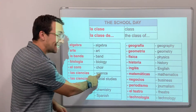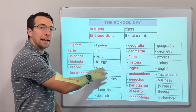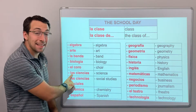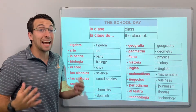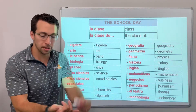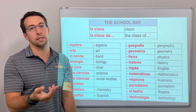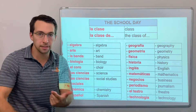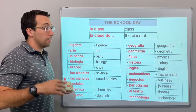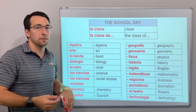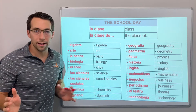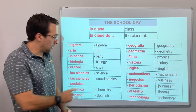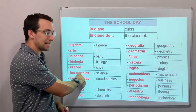Las ciencias. Let's pause here. Science is singular in English, but in Spanish it's always plural — that's why it's 'las.' There are many sciences: chemistry, biology, physics, anatomy, physiology, earth-space science. In Spanish it's always plural: las ciencias.